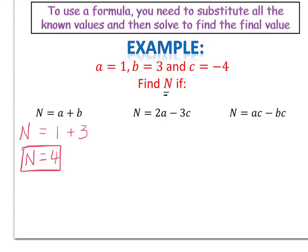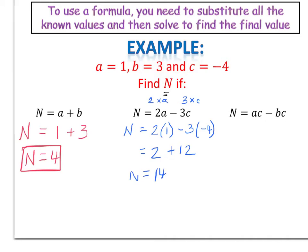Example 2: n equals 2a minus 3c. We need to remember that 2a means 2 times a, and 3c means 3 times c. Substituting in, we get n equals 2 times 1 minus 3 times negative 4. Using brackets for notation: 2 times 1 is 2, and negative 3 times negative 4 gives positive 12. So n equals 14.